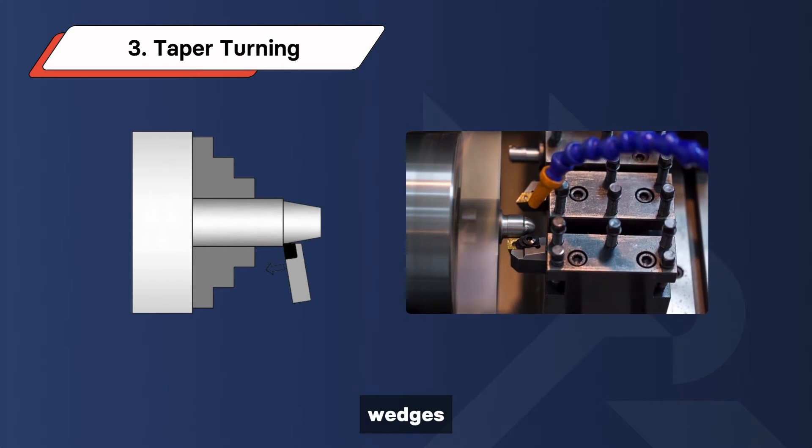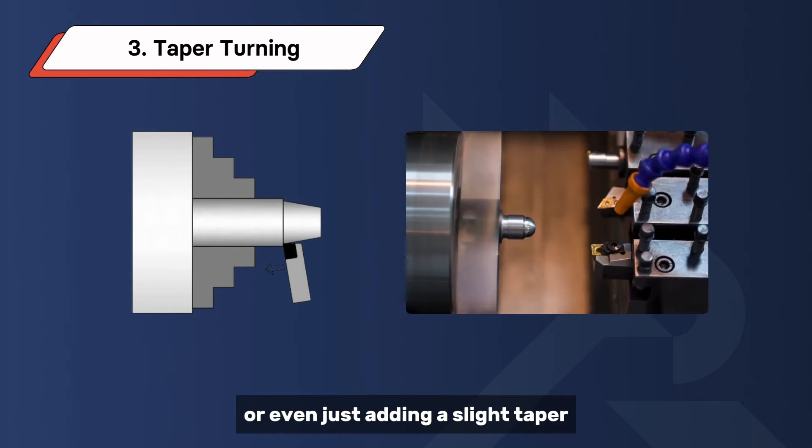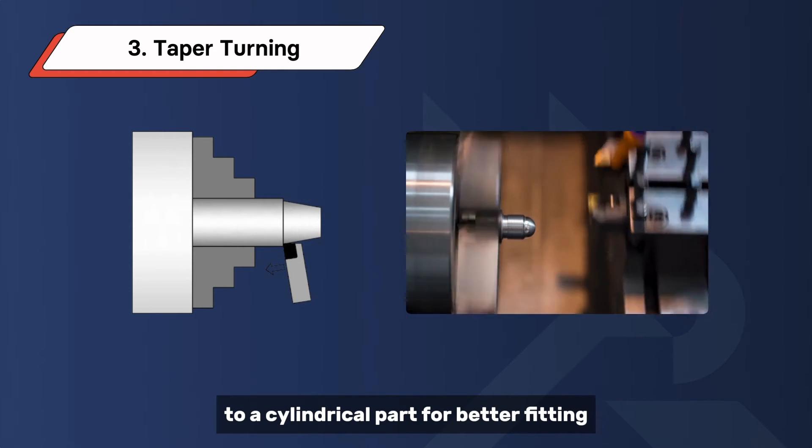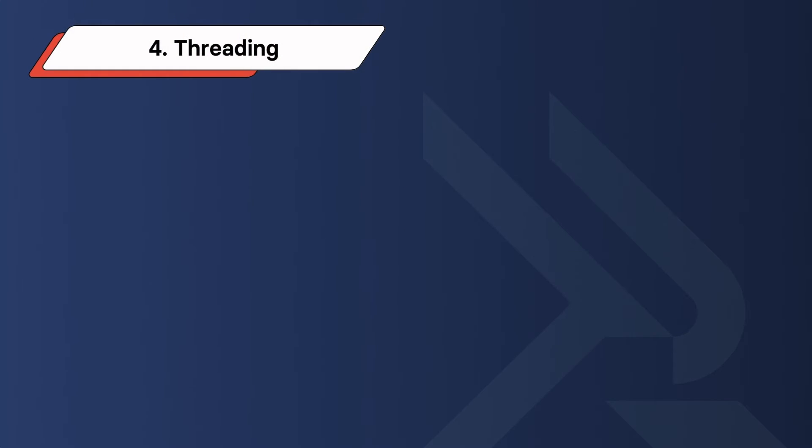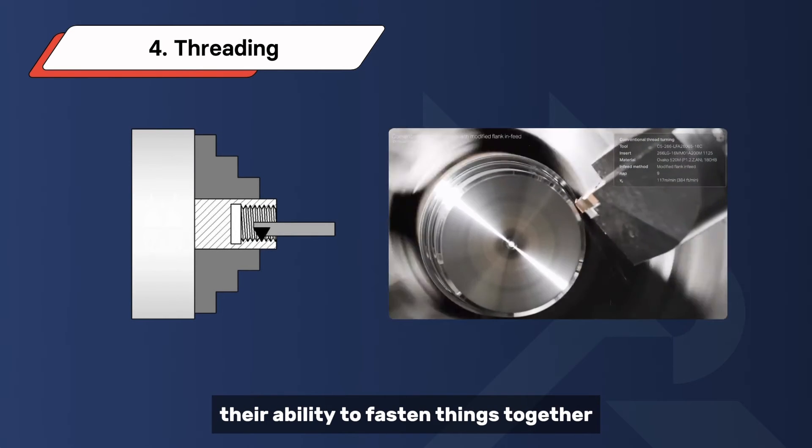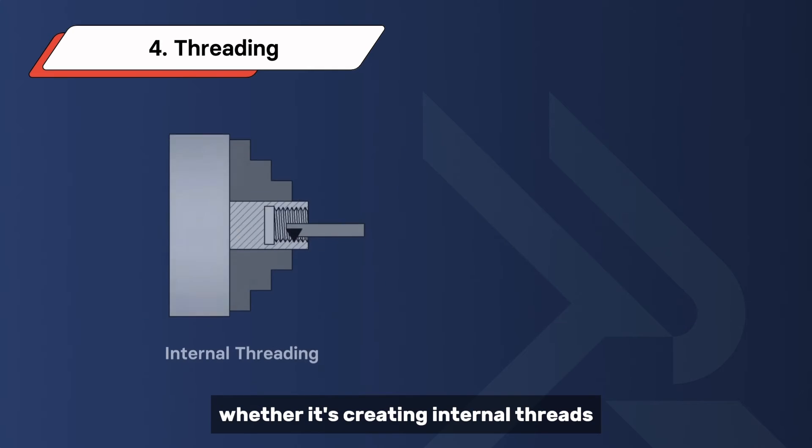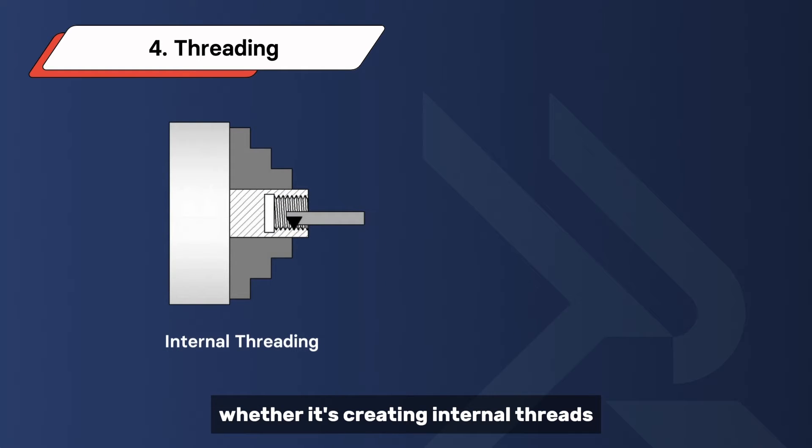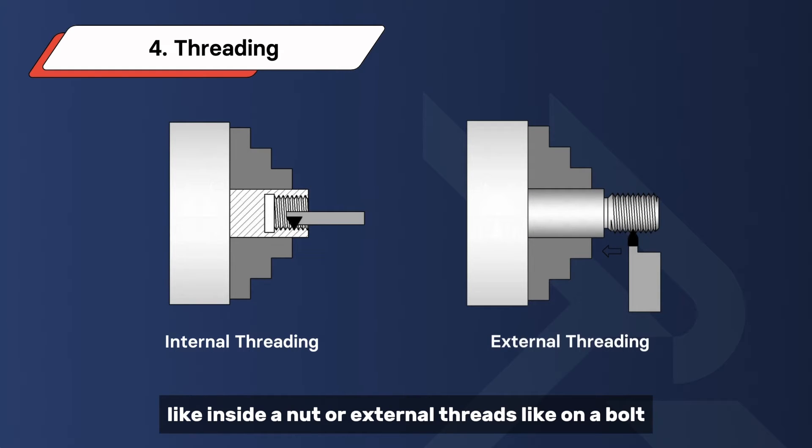Threading is essential for creating screw threads on a cylindrical surface. It's what gives screws their ability to fasten things together. Whether it's creating internal threads like inside a nut or external threads like on a bolt, threading is crucial for many mechanical assemblies.